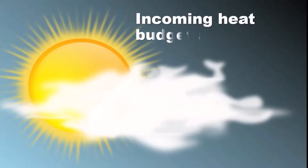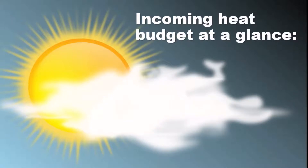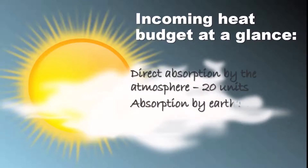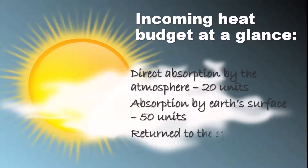So our 100 units of incoming solar energy is distributed as: 20 units are directly absorbed by the atmosphere, 50 units are absorbed by earth's surface, and 30 units are returned to space.